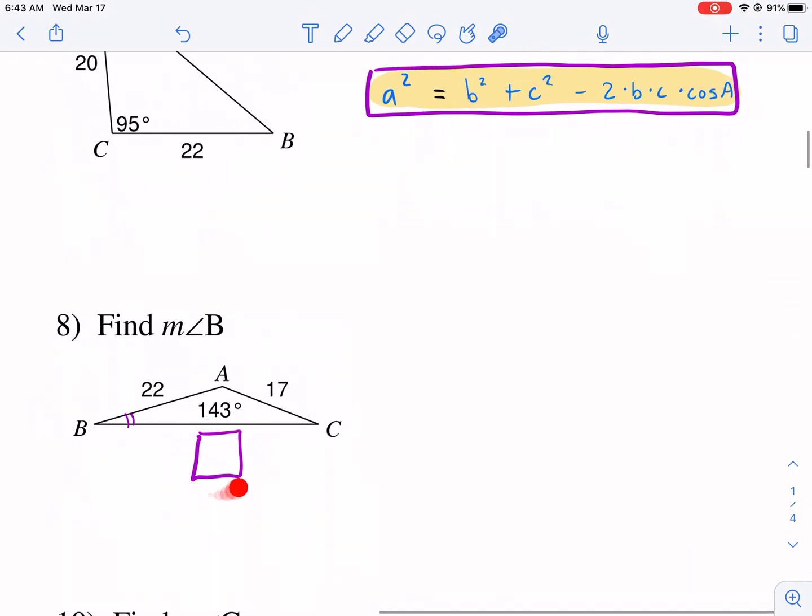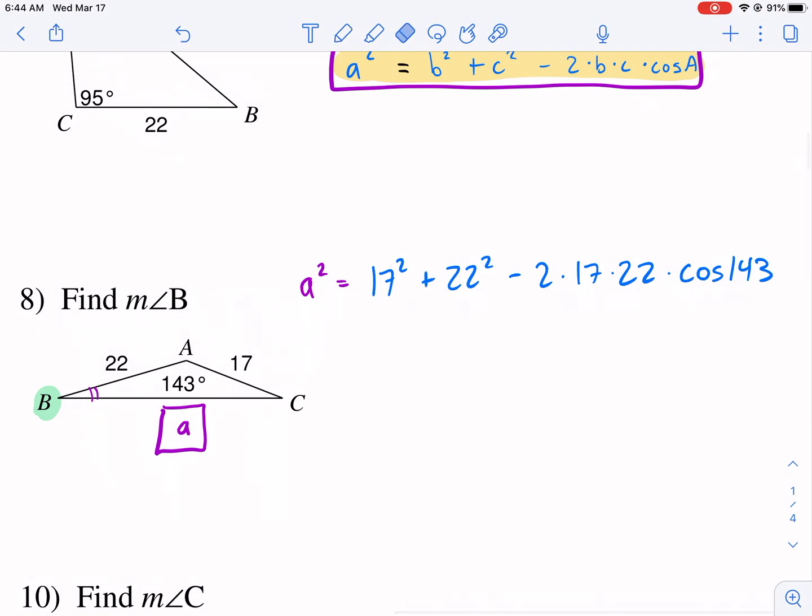So the first thing we're going to have to do is we're going to have to use the law of cosines to find that missing side and we're going to call that a. That has to be our first step if we're going to try to have any success looking for angle B. So, let's go ahead and show how that works. We have a squared. We know that is what we're working with. We're going to put b squared - b squared we'll call 17 squared plus 22 squared is c minus 2 times b, which is 17 again times 22 times cosine of a, which is 143. So see here I have everything given except for one measurement.